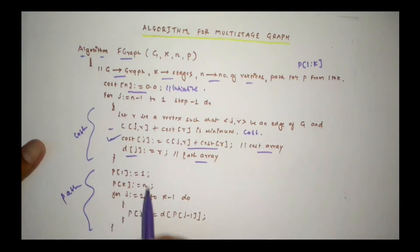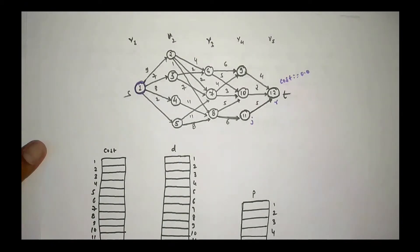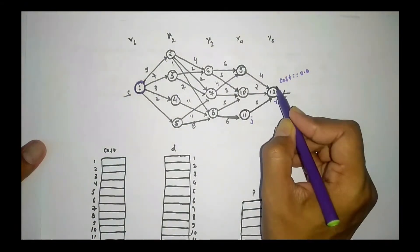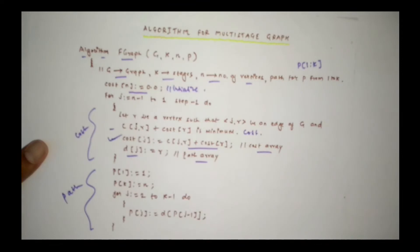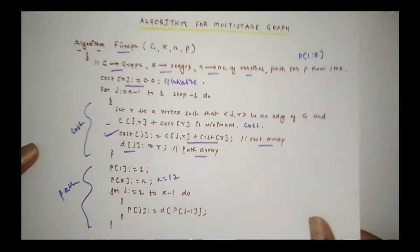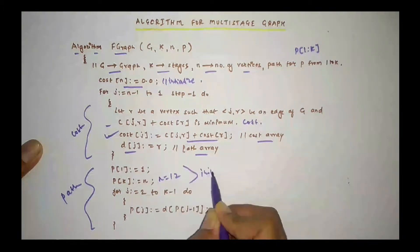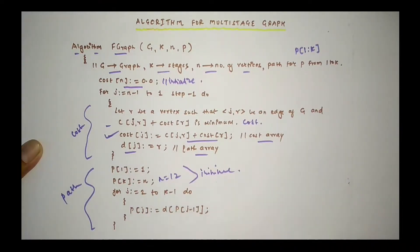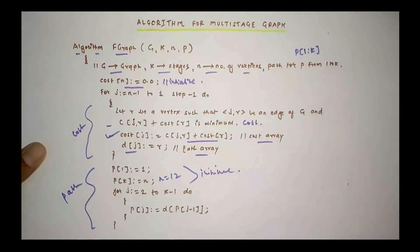P(1) equal to 1 and P(K) equal to N. P(1) equal to 1 means your first stage has its vertex set to 1. P(N) means your last stage has its last vertex. So P(K) is pre-assigned and initialized. P(1) equal to 1, and P(K) is equal to 12.